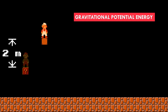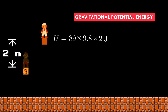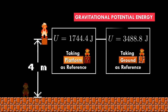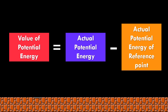Now what if we changed the reference? The value will be different since the reference point changed. For example, what if we took the lower platform as the reference? Let's say the height of the higher platform measured from the lower platform is 2 meters. Then the potential energy would be 89 times 9.8 times 2 joules, which equals 1744.4 joules. The value for the same platform changed from 3488.8 to 1744.4 because we are now using a different reference point. This means Mario has 1744.4 joules more energy than if he were on the lower platform.